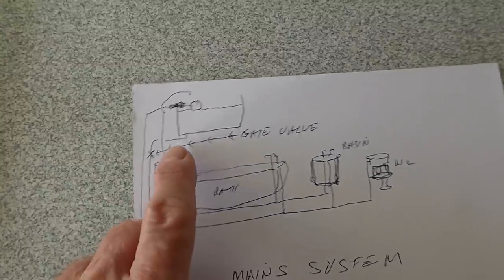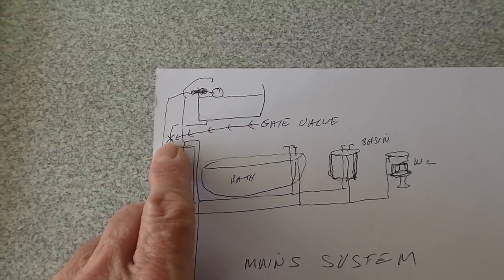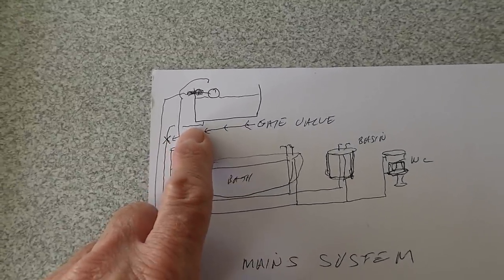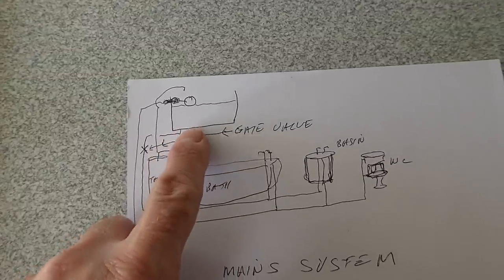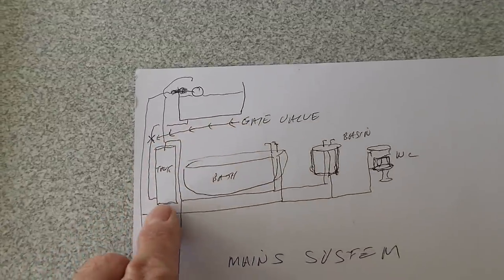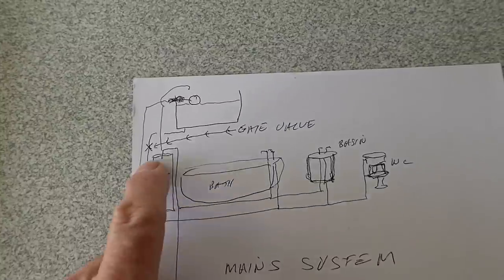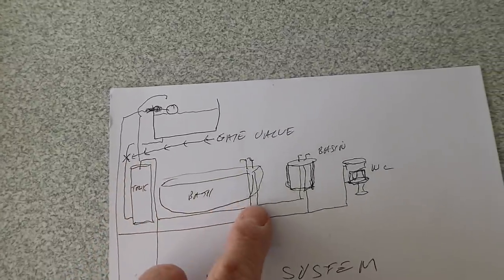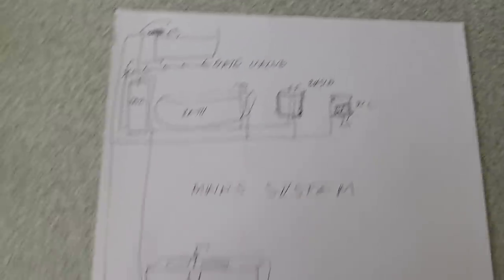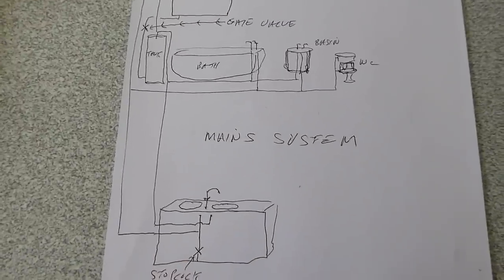But by far the best thing to do is find a gate valve which will be in the airing cupboard or it could be by the roof tank in the loft. And you can see how it works here, the feed just drops down into the bottom of the tank, the hot water tank, out the top and around to the bath basin and down to the kitchen.